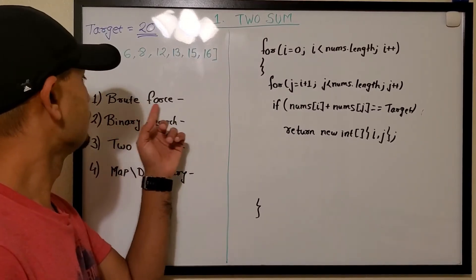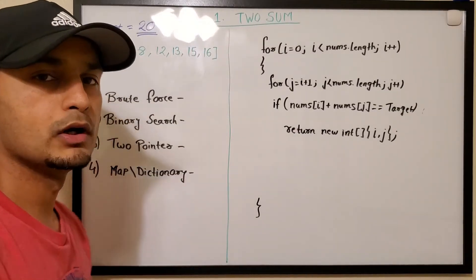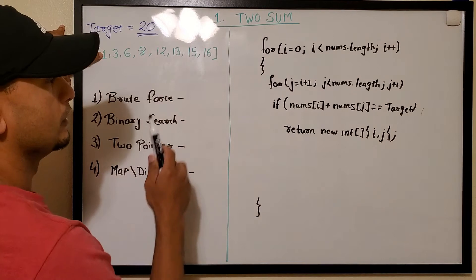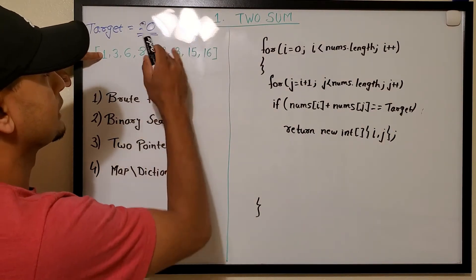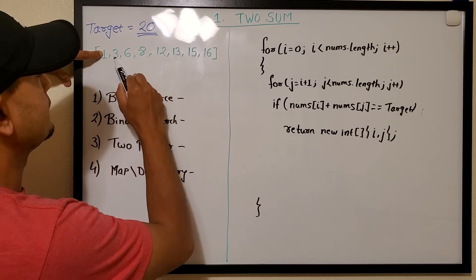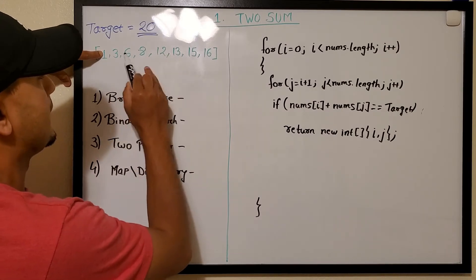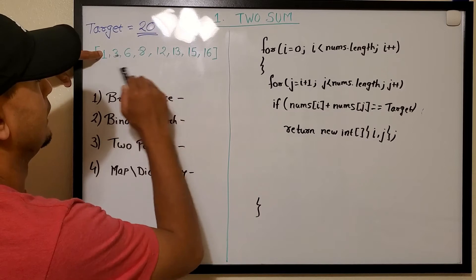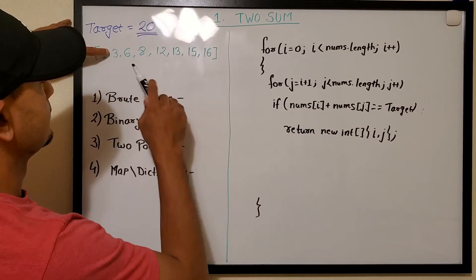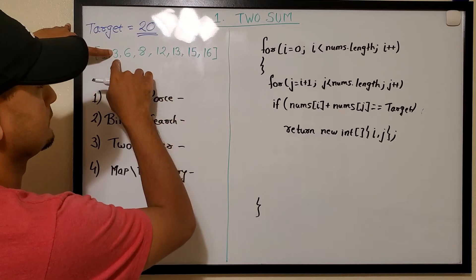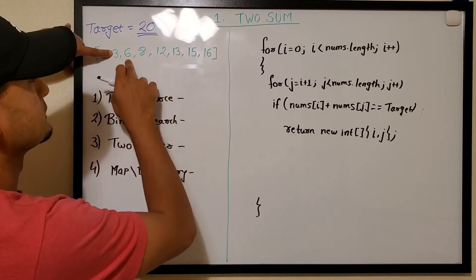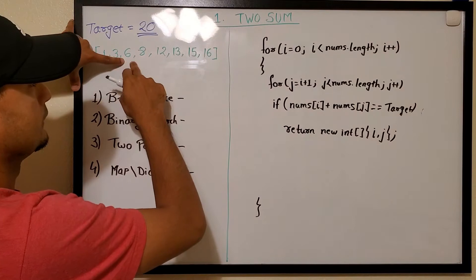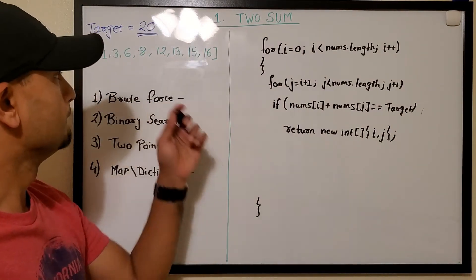In brute force, it's a straightforward approach — we take one number and add it with the rest of the numbers to see if the sum equals the target of 20. We take 1, add with 3, check if it's 20, then 1 plus 6, and so on. If not found, move to the next number and repeat.